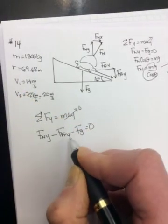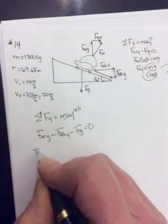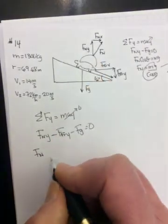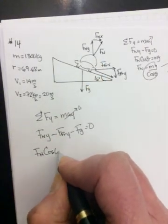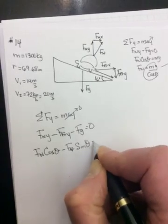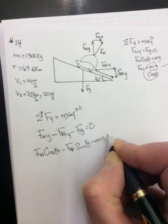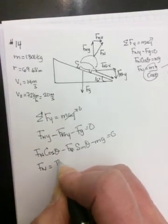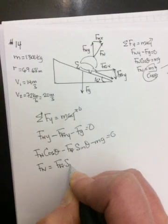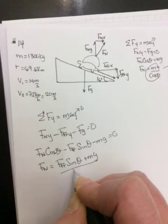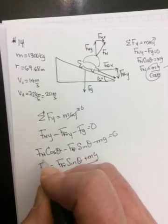So this time, because we're solving for friction, don't break your friction up into mu Fn. So it will be Fn cos theta minus friction sine theta minus mg equals 0. Solve, rearrange for Fn. So friction sine theta plus mg over cos theta is your Fn.